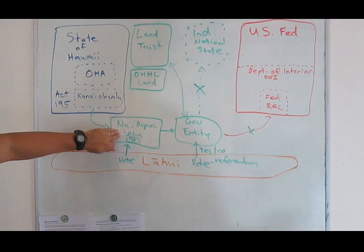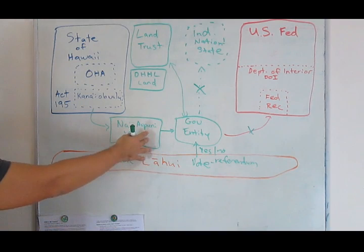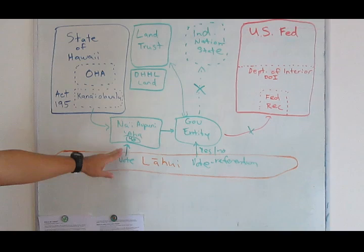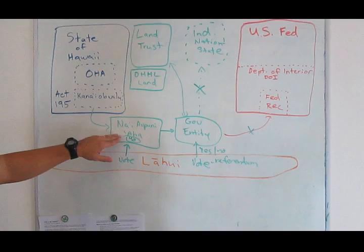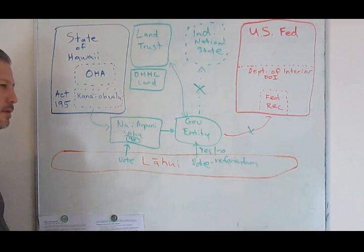First thing is to get, to talk about it, get informed. Second thing, identify delegates that you can support and vote for those delegates in November. The voting's gonna take place between November 1st and November 30th. Vote, if you find someone that you can agree with, vote them in.